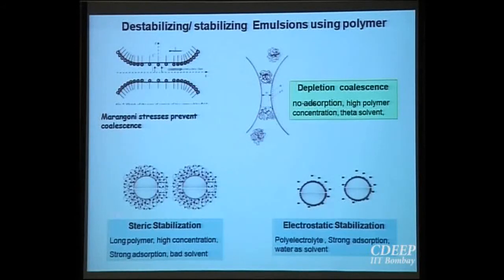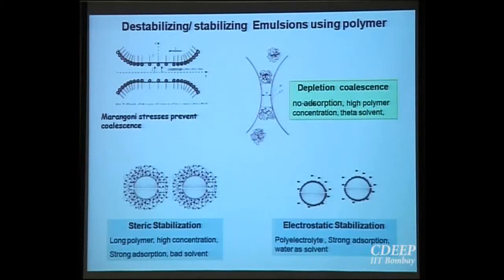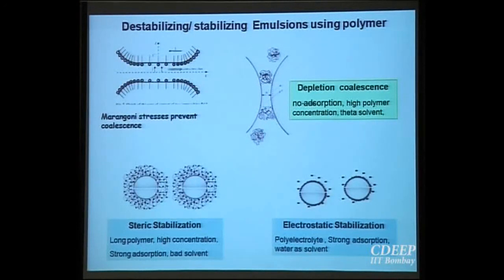Another stabilization mechanism is steric stabilization — polymer densely covers the drop surface, and when two polymer-covered drops come near each other, there is a repulsive interaction because the polymer chains resist interpenetration due to entropy loss. You can also have electrostatic stabilization using charged polyelectrolytes: the two drops repel each other electrostatically, but adding salt reduces the Debye length and shrinks the double layer, destabilizing the emulsion. Another mechanism is depletion coalescence — non-adsorbing polymer coils are excluded from the gap between two approaching drops, creating an osmotic gradient that draws solvent out and drives coalescence.